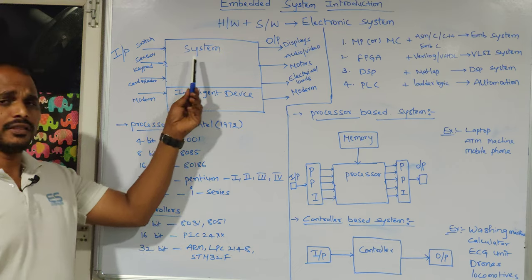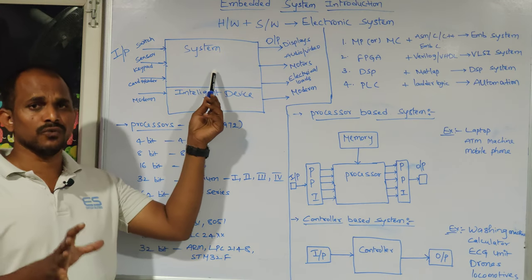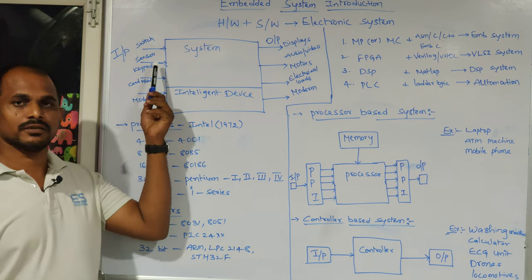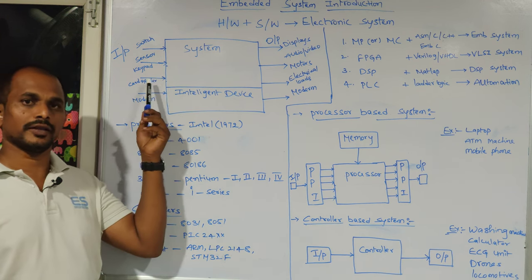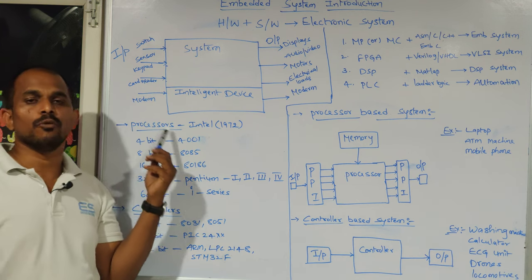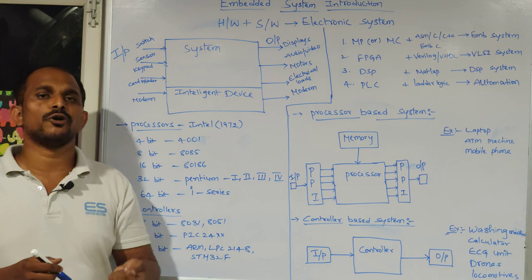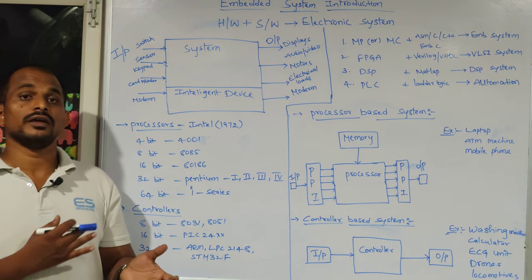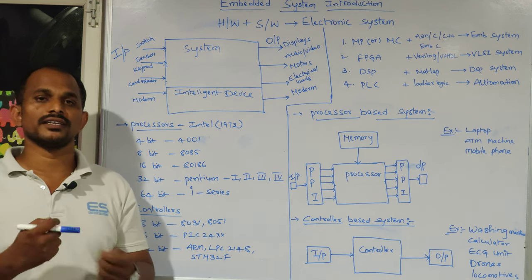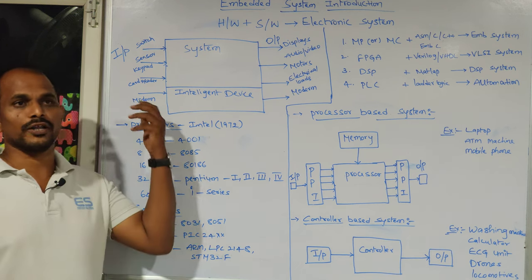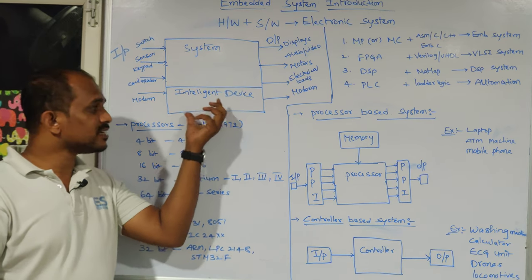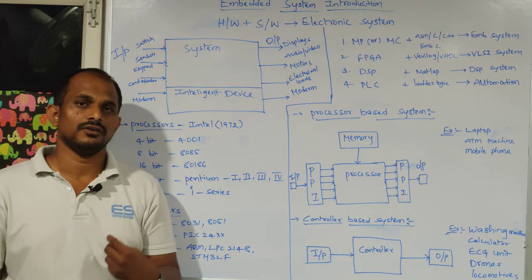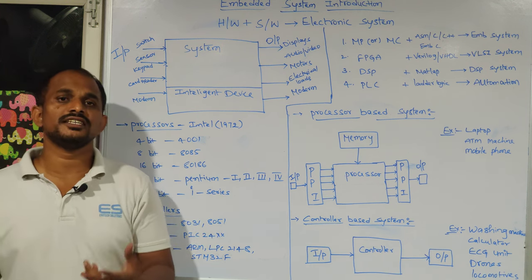An electronic system does work decided by the engineer. Inputs can be switches, sensors, keypads, keyboards, card readers, or modems — such as GSM modules, Wi-Fi modules, or GPS modules that receive wireless signals. Inside the system there is one intelligent device. An intelligent device accepts your program — whatever work you expect from the system, you must express it as instructions or code.